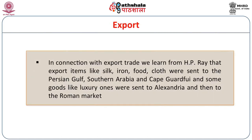In connection with export trade, we learn from H.P. Ray that export items like silk, iron, and food — even today we find these items exported to different countries — were sent to the Persian Gulf, Southern Arabia, and Cape Guardafui. Some goods, particularly luxury ones, were sent to Alexandria and then to the Roman market. This is how we get export trade.